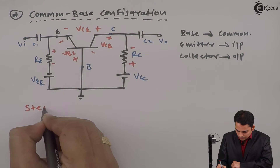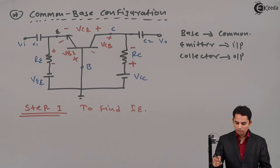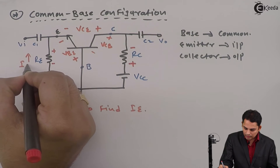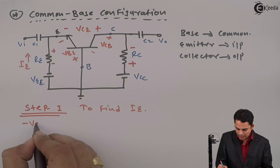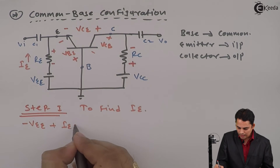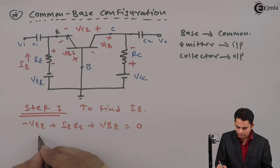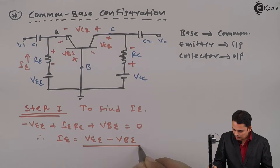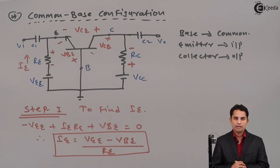Step one is to find IE, for which we apply KVL to the input loop. The current through RE is IE. Applying KVL gives: minus VEE, plus IE times RE, plus VBE equals zero. Hence, IE is equal to VEE minus VBE divided by RE. This is how we get the emitter current in the circuit.